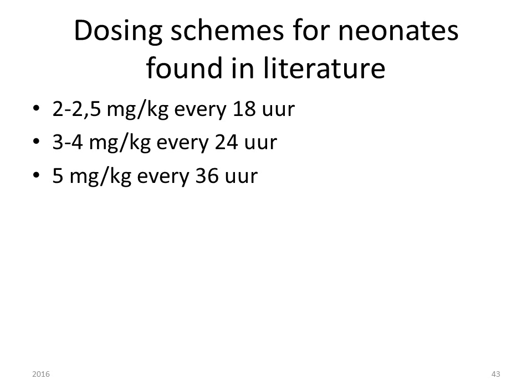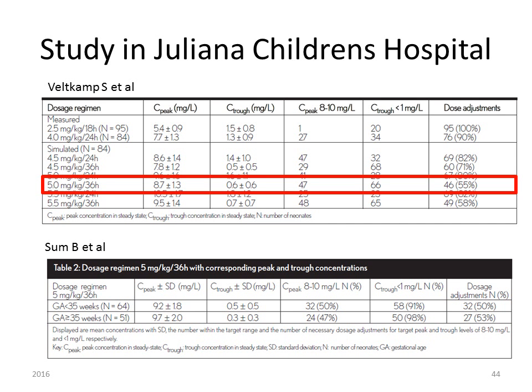Dosing schemes for gentamicin in neonates have changed in the last decade. In the past, 2 to 2.5 mg per kilogram body weight every 18 hours was given. This has evolved to 5 mg per kilogram body weight every 36 hours. A study performed in the Juliana Children's Hospital in The Hague showed that with 5 mg/kg every 36 hours, only 55% of cases required a dose adjustment — fewer than with other dosing schemes.